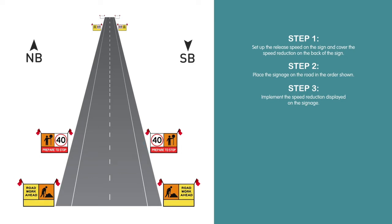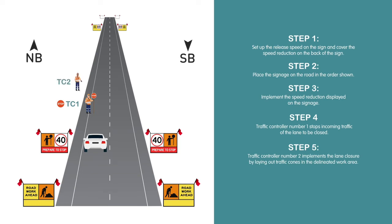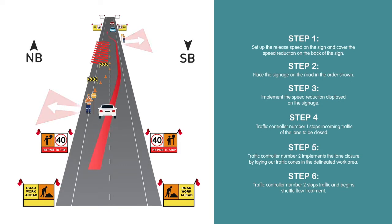Step 4: Traffic controller number 1 stops incoming traffic of the lane to be closed. Step 5: Traffic controller number 2 implements the lane closure by laying out traffic cones in the delineated work area. Step 6: Traffic controller number 2 stops traffic and begins shuttle flow treatment. Don't forget your escape route and that it can change regularly.